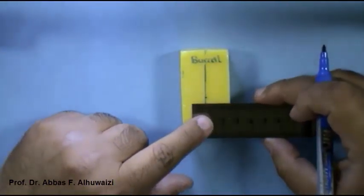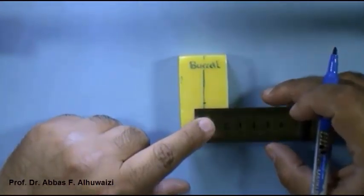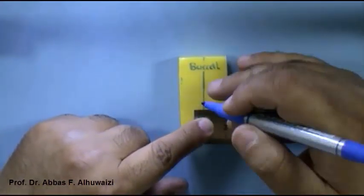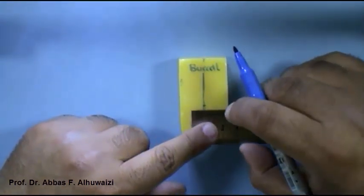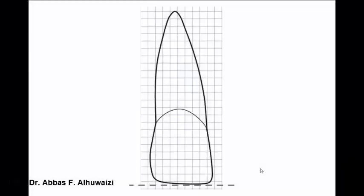Now we bring the ruler and mark the dimensions of the crown as in the following diagram. This is the shape of the central incisor. We draw the midline, which divides the crown into equal halves. The tip of the root will be about 1 mm away distally from the midline.